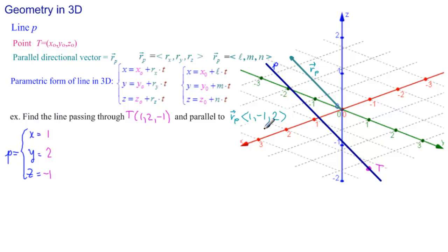And then we use the components of our parallel directional vectors. So plus 1 times T, minus 1 times T, and plus 2 times T. Let's clean that up. And we get x equals 1 plus T, y equals 2 minus T, and z equals minus 1 plus 2T.